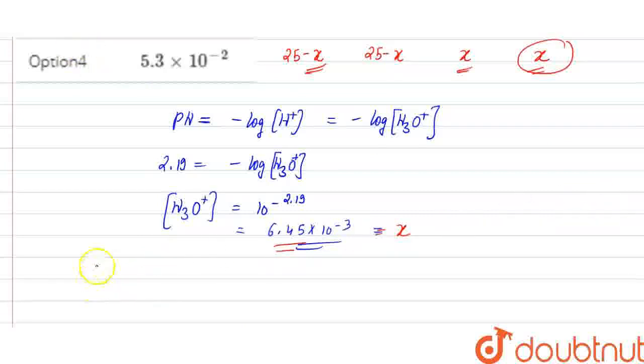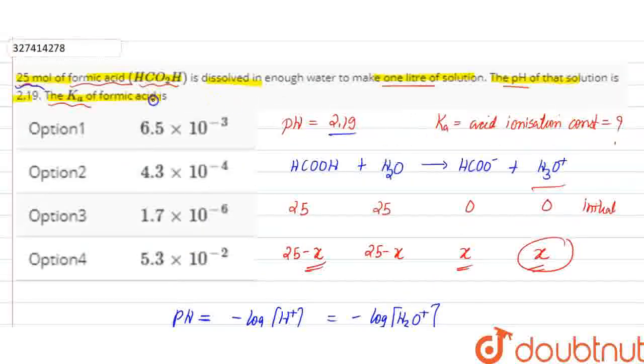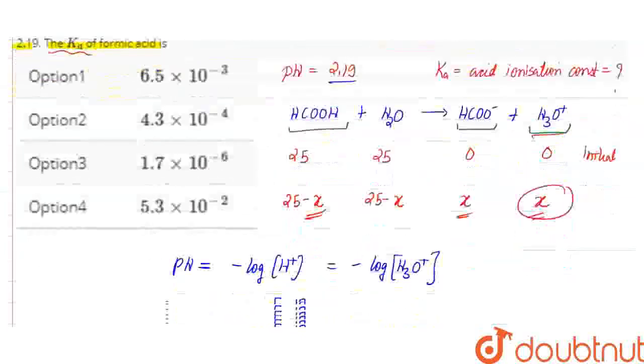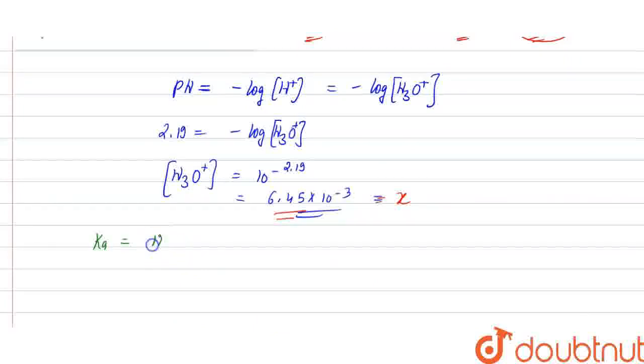Now what do I need to find? I have to find the acid ionization constant, which is Ka. For this formic acid reaction, this is the product concentration over the reactant concentration. So Ka equals [HCO⁻][H3O⁺] over [HCOOH].